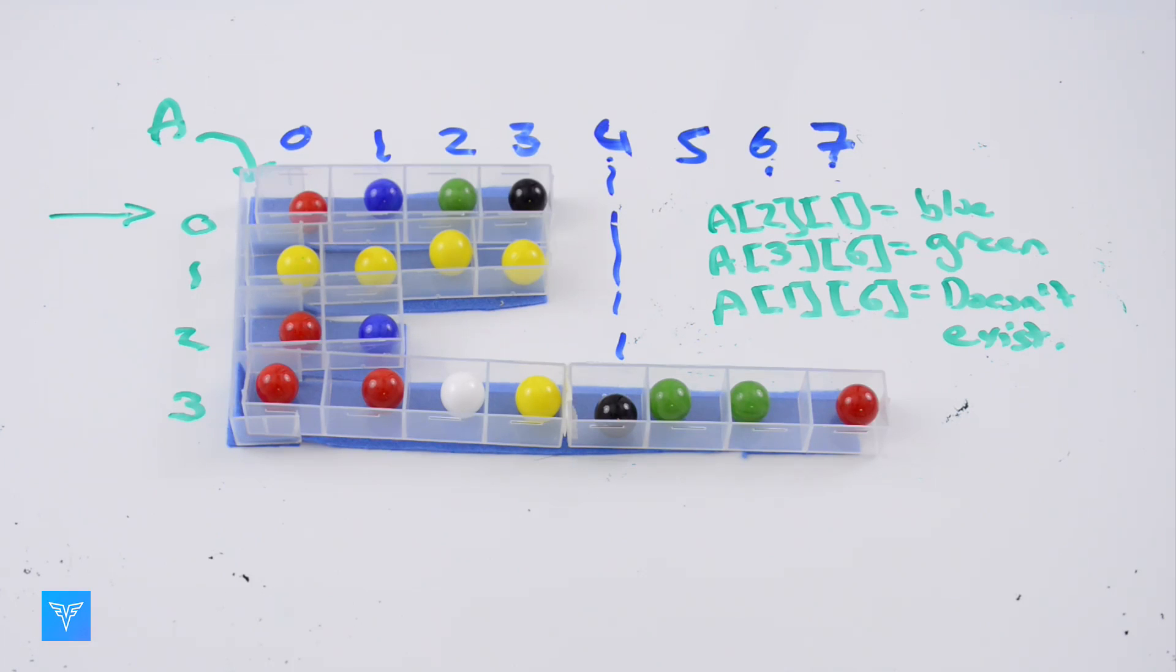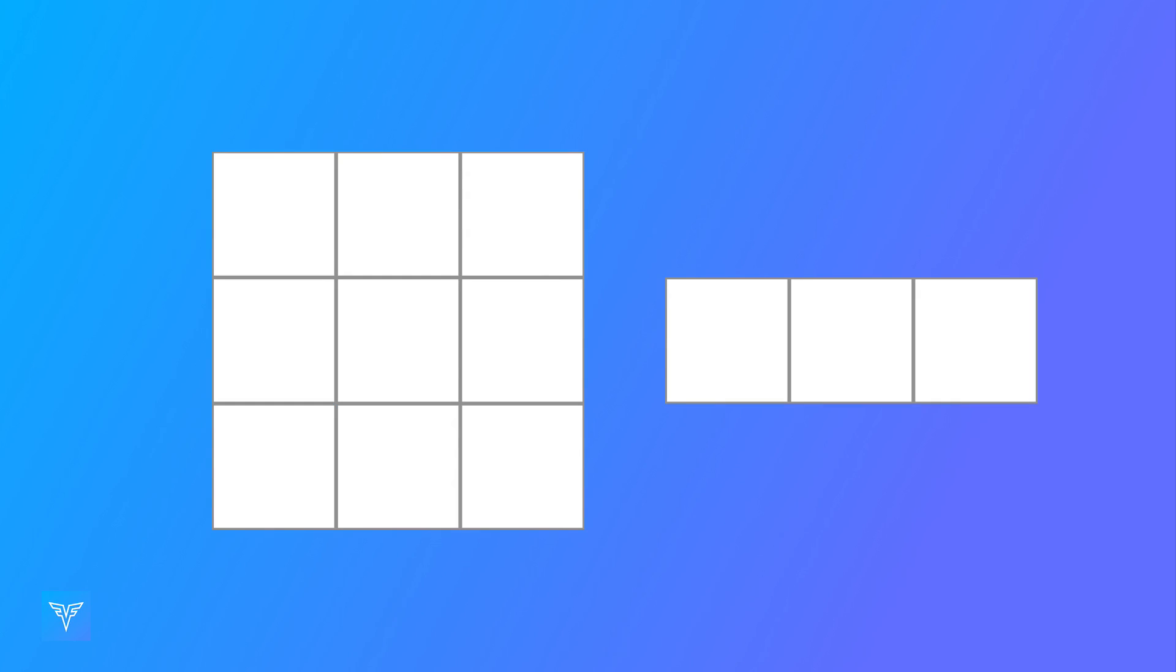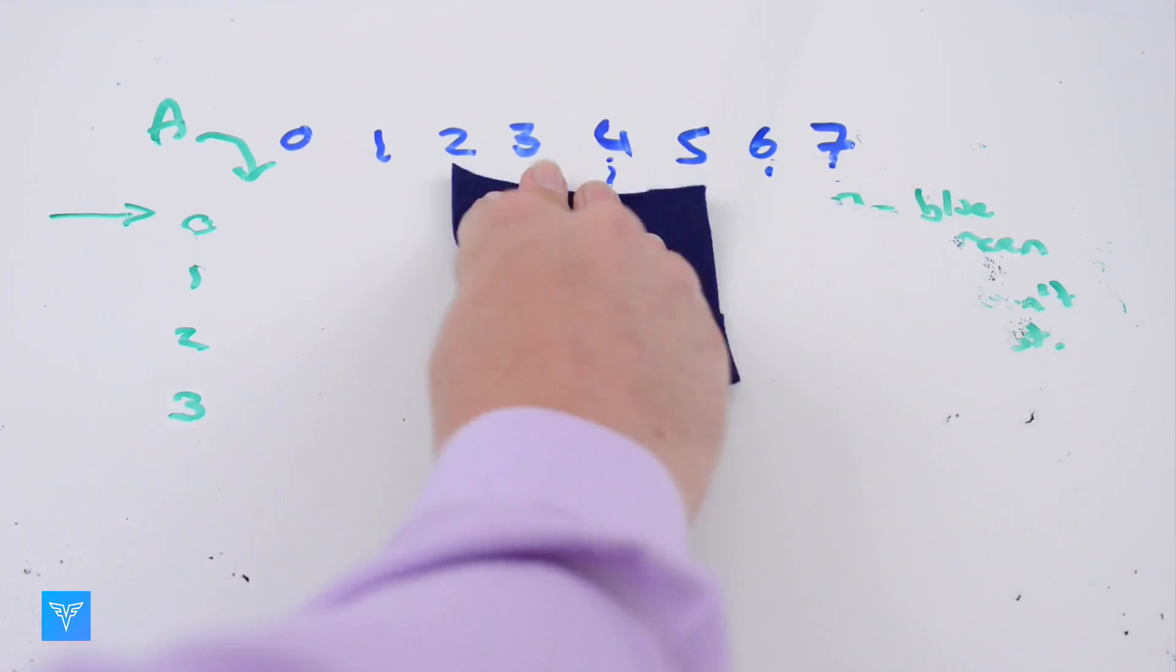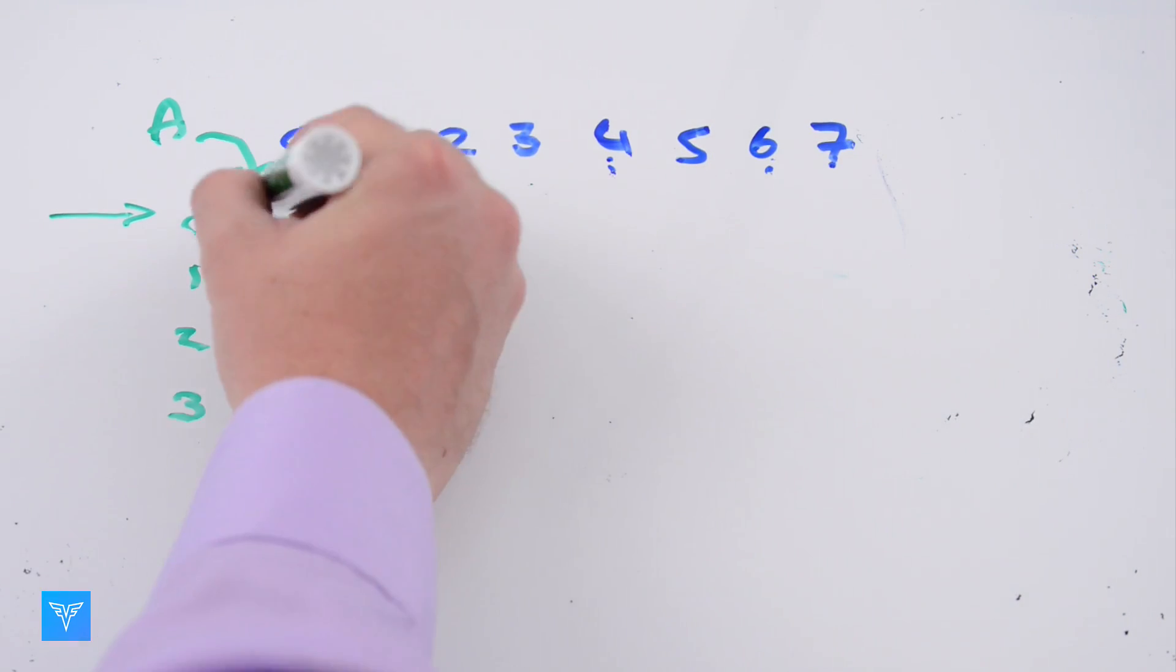Of course, we could make an array whose elements were arrays whose elements were arrays. You could use this technique of putting arrays in arrays to make three-dimensional, four-dimensional, or any-dimensional arrays. For interviews, it's rare to see more than a two-dimensional array.